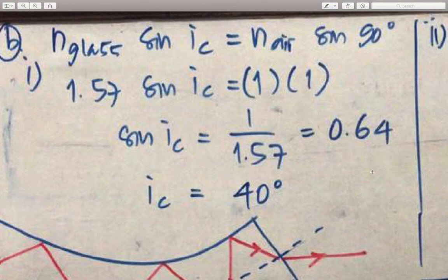N glass sin critical angle equals N air sin 90 degrees. 1.57 sin Ic equals 1 times 1. Sin Ic equals 1 divided by 1.57, equals 0.64. Ic equals 40 degrees.